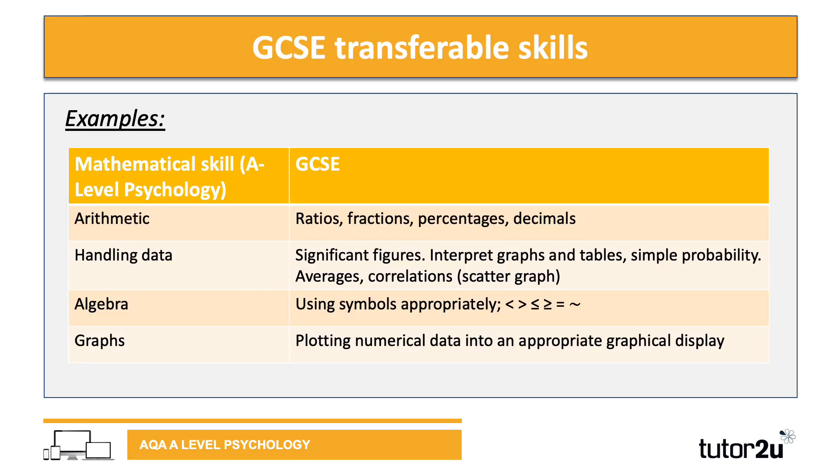In terms of what's transferable from GCSE, you would have covered ratios, fractions, percentages, and decimals. The mathematical skills in A-level psychology include arithmetic, which encompasses all of those, plus handling data, algebra, and graphs. Hopefully you can read this table and recognize that you've covered all of these in GCSE. I can't stress this enough - you will be recapping this and learning it again in the A-level psychology course with your teacher.